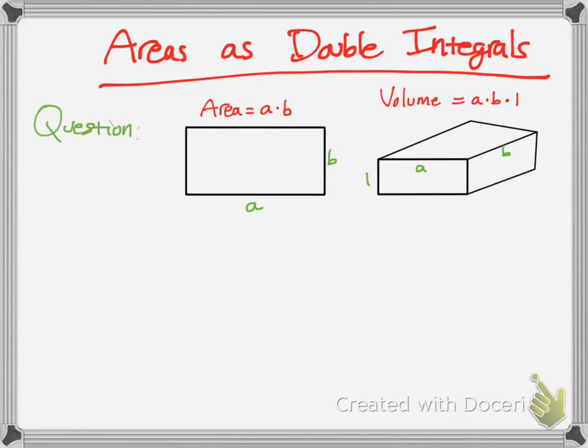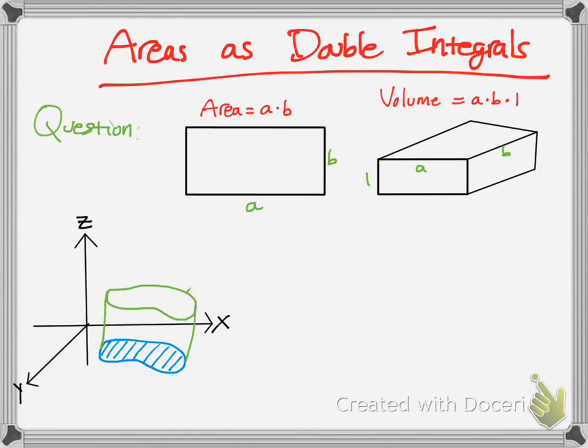The area on the left could be in meters squared, and volume could be in meters cubed. But, the numerical value would be the same. Say it was three times two would be six. The volume would also be six here, but in different units. But, mathematically, they have the same numerical value.